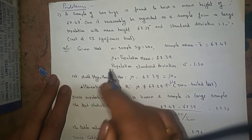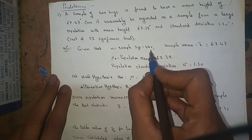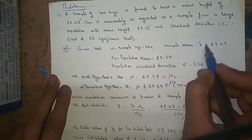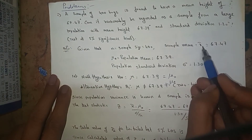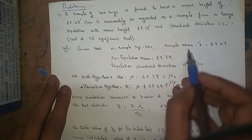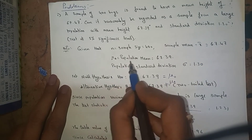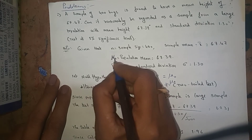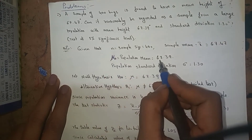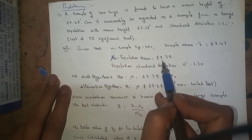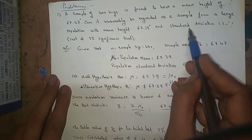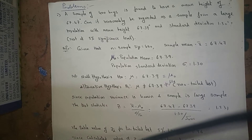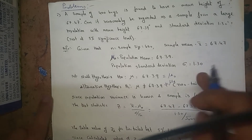Given: sample size n = 400, sample mean x-bar = 67.47, population mean mu naught = 67.39, and population standard deviation sigma = 1.30.